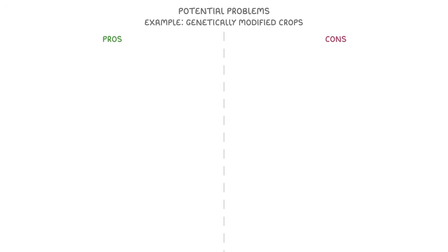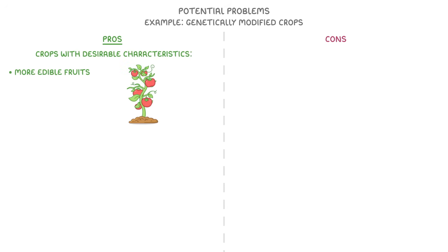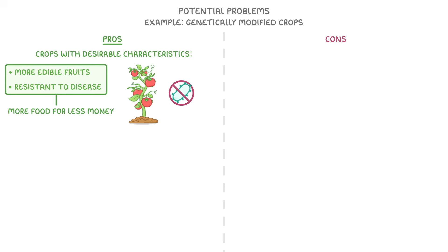As with everything in science, there are some potential problems with genetic engineering. Looking at the pros and cons of genetically modified crops: the pros are that we can easily make crops have desirable characteristics, like more edible fruit or being resistant to disease, which means we can make more food for less money. This is particularly important when it comes to developing countries, as people still die from starvation.